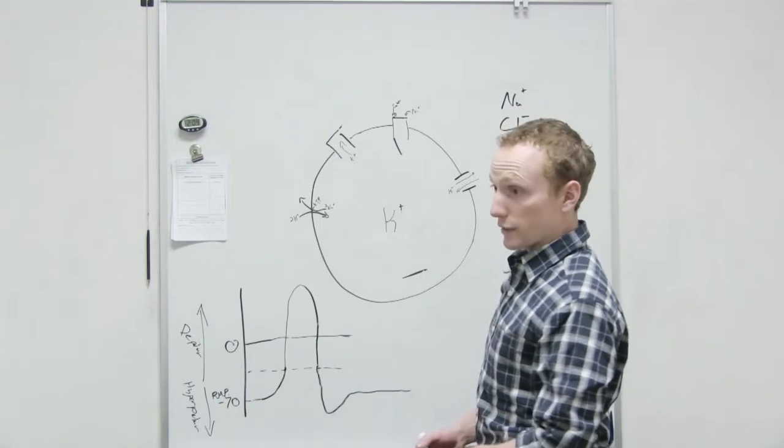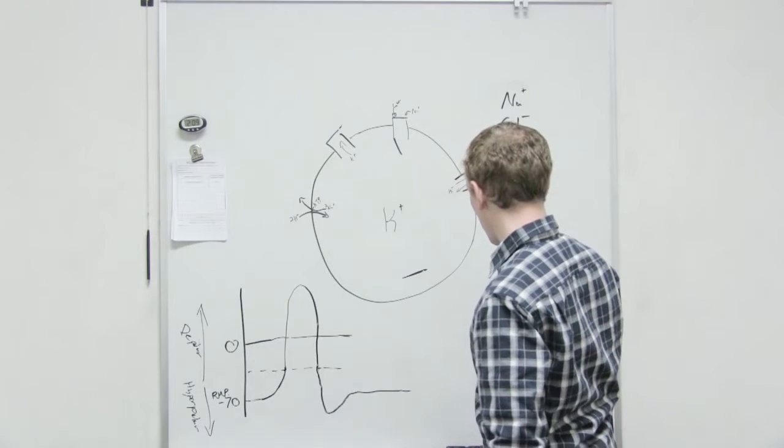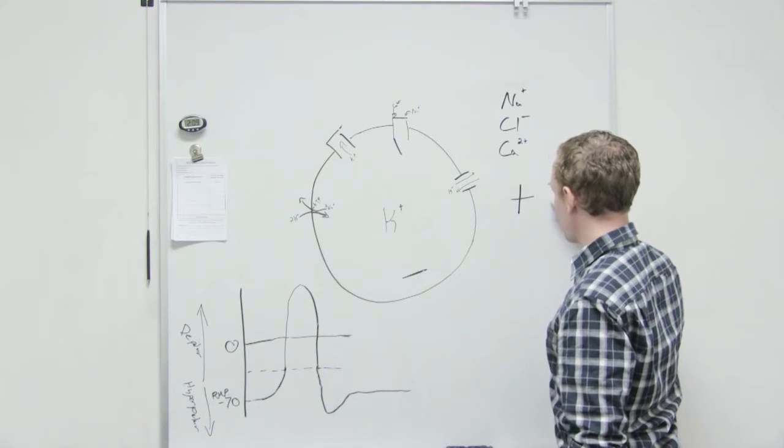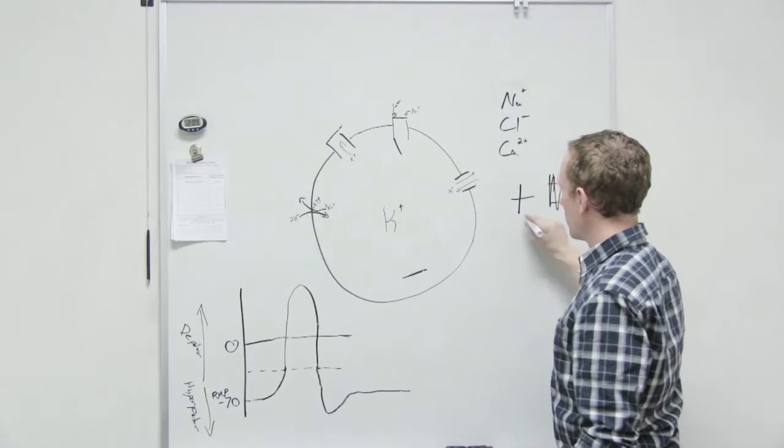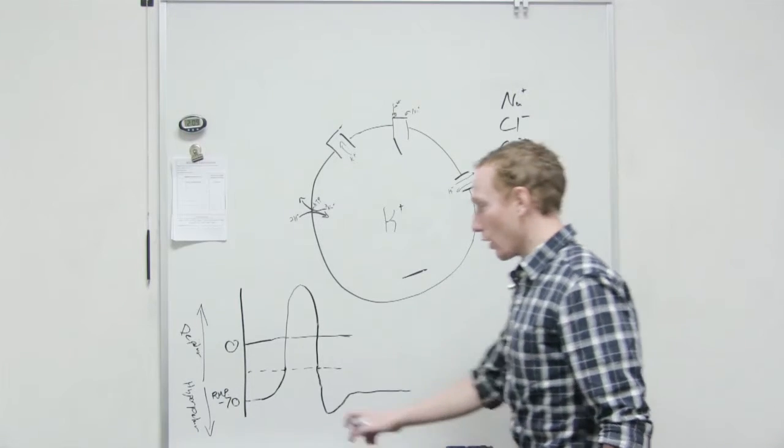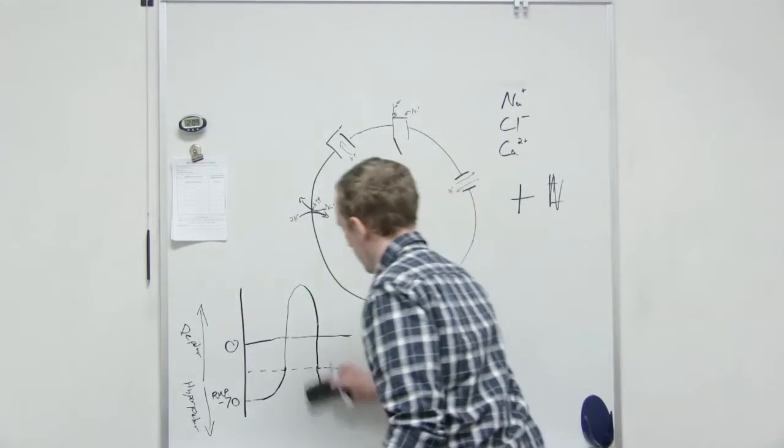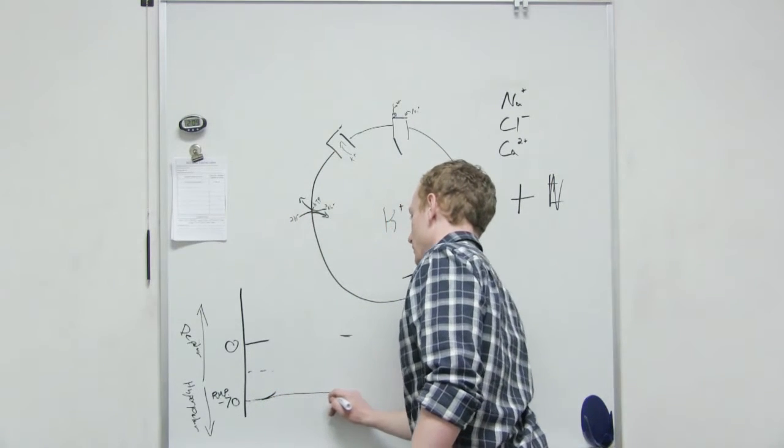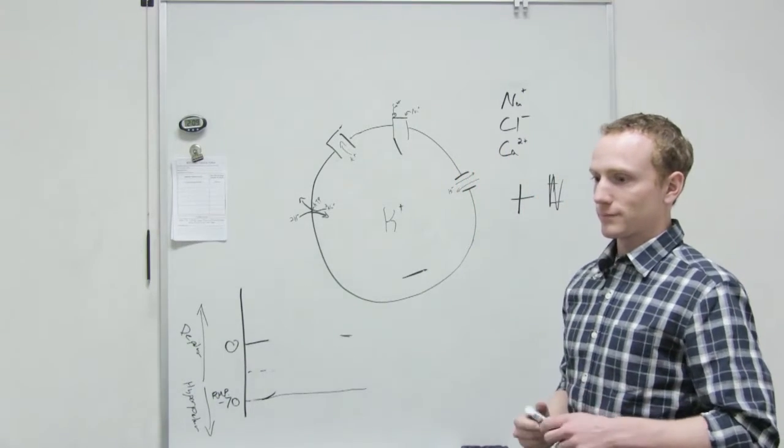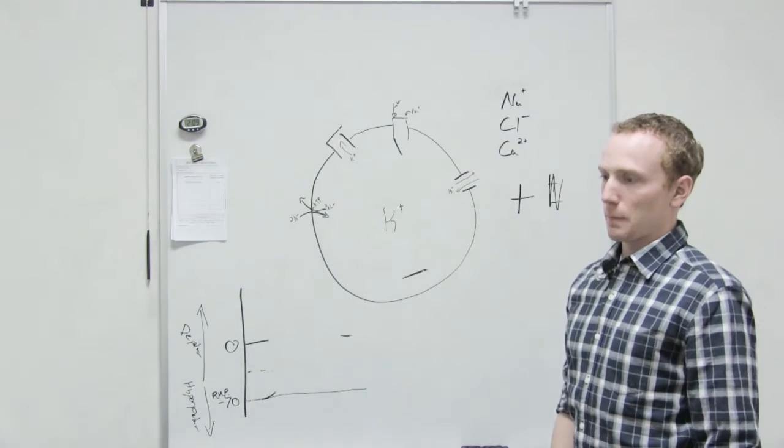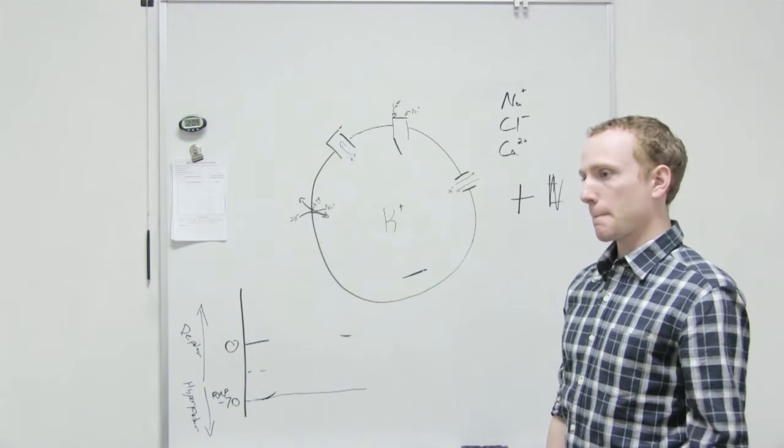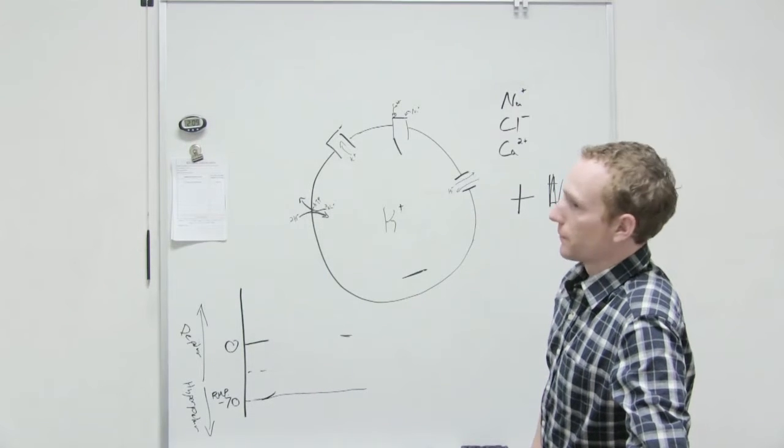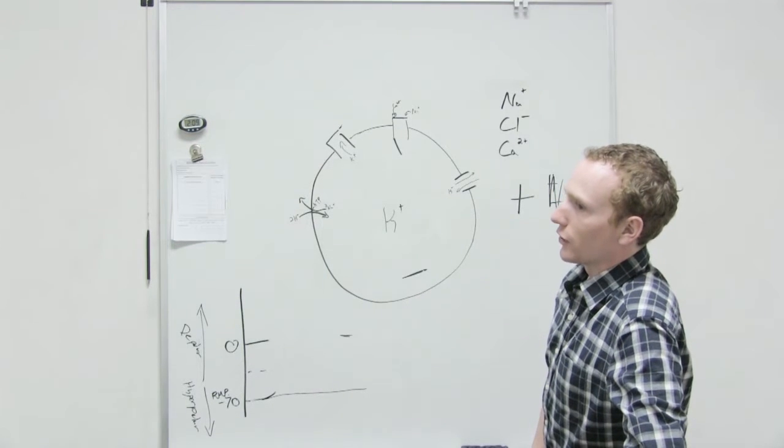How's that going to affect RMP? Normally it is positive on the outside, right, but we added a bunch of positives and negatives so those cancel out. So it stays the same positive. RMP for hypernatremia or hyponatremia for that matter is the exact same, it doesn't change.